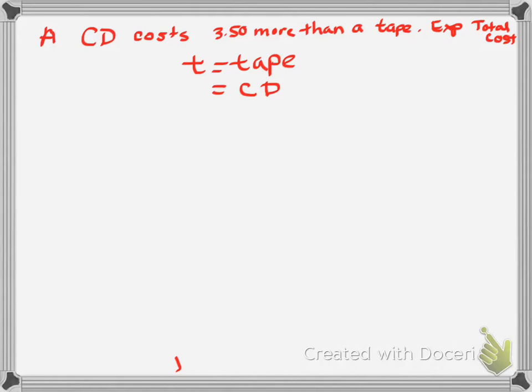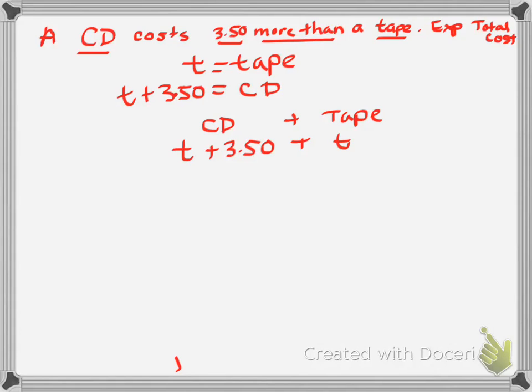Now, if I've done the tape and I know it's less, what they're giving me is the translation. CD is $3.50 more than tape. So, how would I translate that? T plus $3.50. Perfect. Now, if I'm looking for an expression, there can't be an equal sign in there. What's it going to look like for the total cost of both? T plus $3.50, which is the cost of a CD, plus the tape is T.